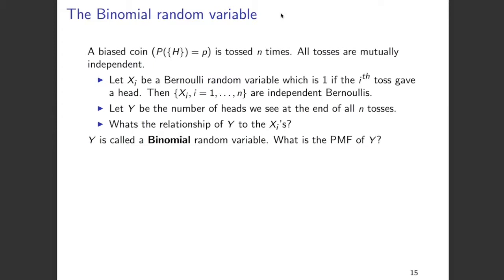What is the relationship between y and the xi's? Essentially, y is the summation of all the xi's. So if you have, say, out of 10 coin tosses you get 5 coin tosses to be heads, then those 5 xi's will all be 1 and the remaining xi's will be 0. And y, expressed as a summation of all the xi's, would just turn out to be 5.